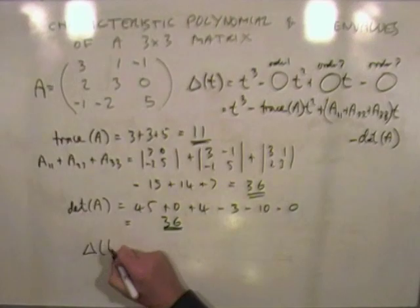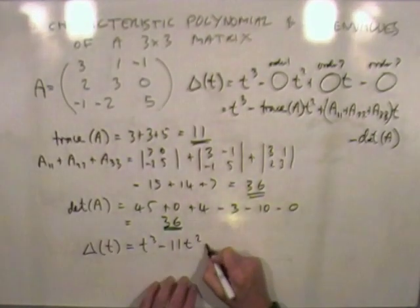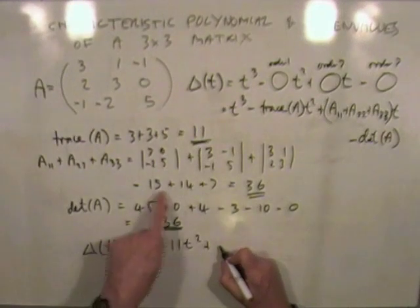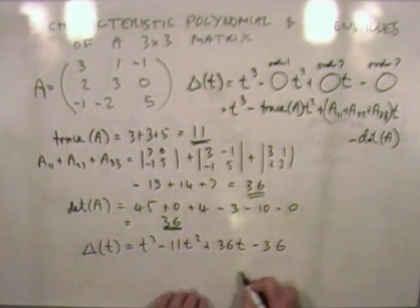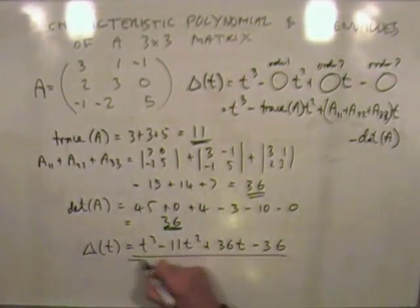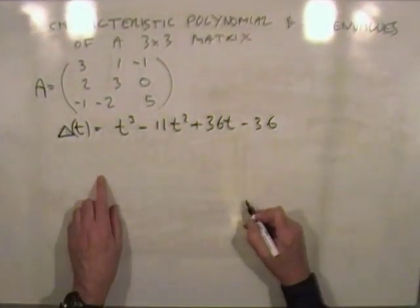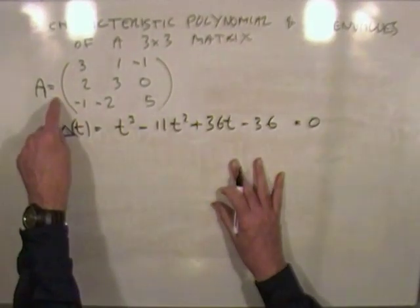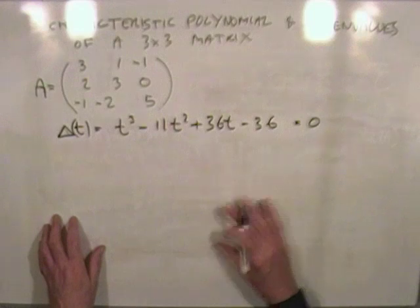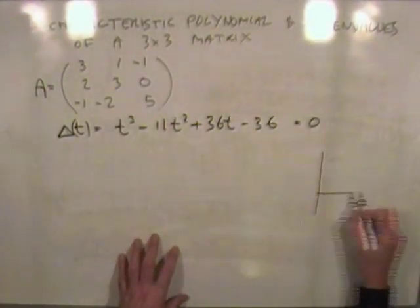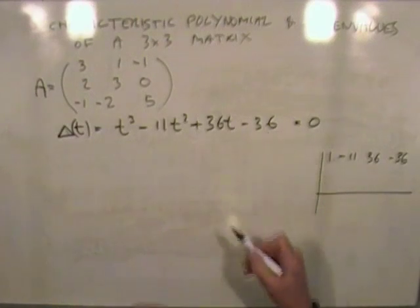Putting it all together, the characteristic polynomial is t cubed minus eleven t squared plus thirty-six t minus thirty-six, which matches what we found before. Note also that the matrix itself is a root of its own characteristic polynomial — that's the Cayley-Hamilton theorem. To find the eigenvalues, we need the roots of this polynomial, which involves synthetic division with coefficients one, negative eleven, thirty-six, negative thirty-six.